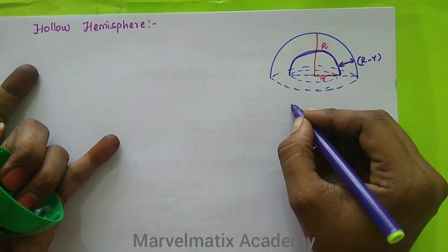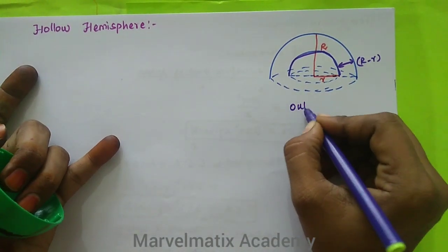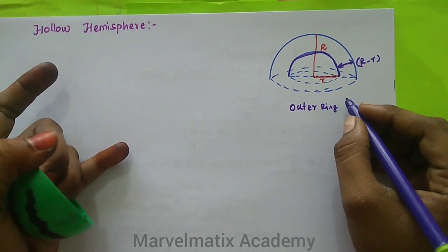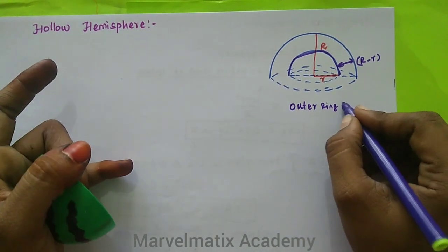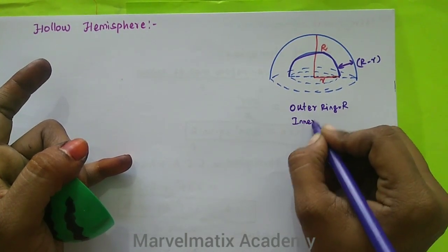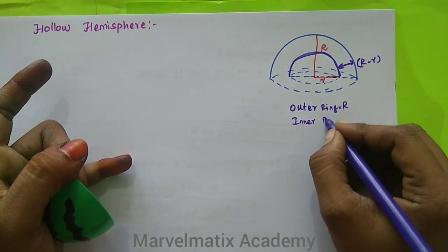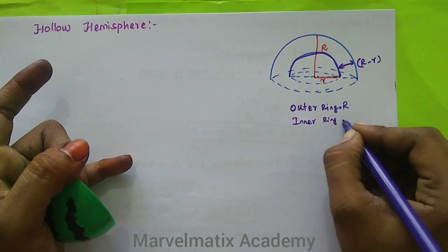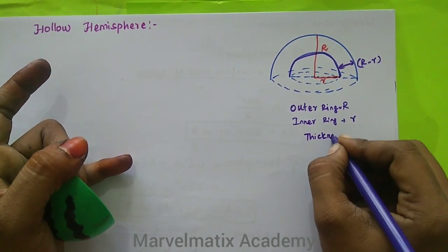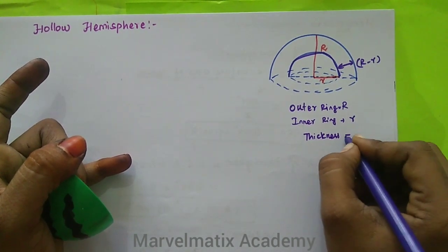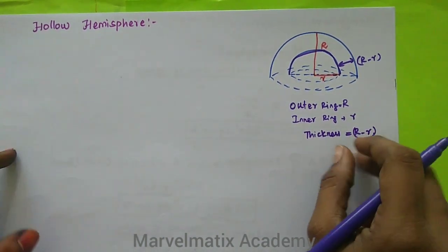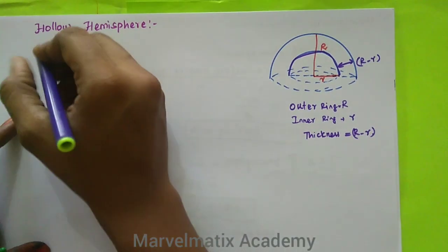So we have the outer radius — that is the outer circle, capital R — and the inner radius — that is the inner circle, small r. The thickness is R minus r. And this is the CSA.